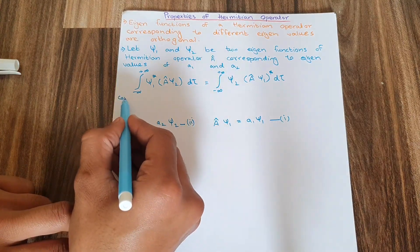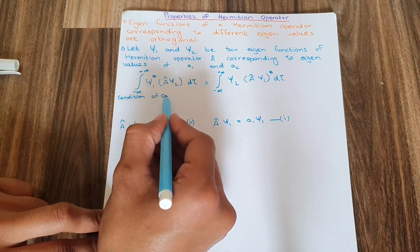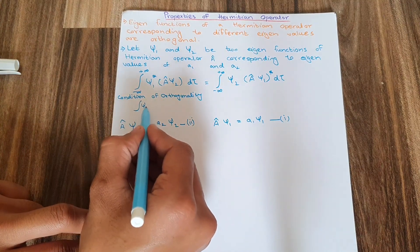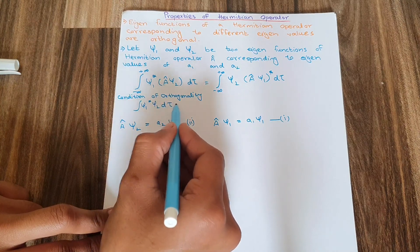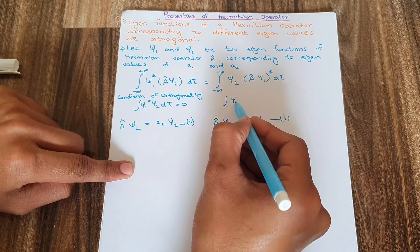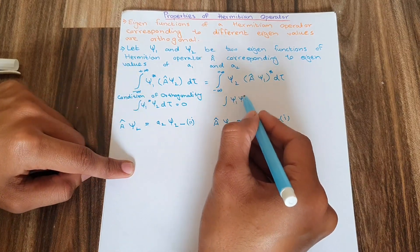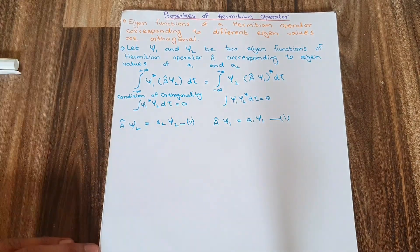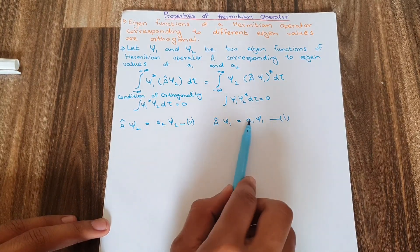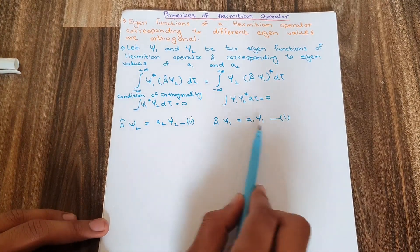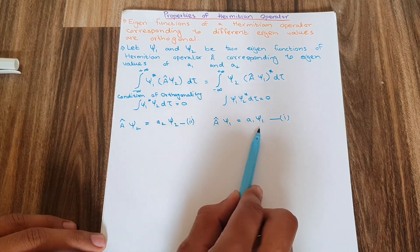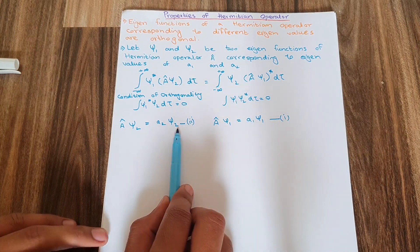The condition of orthogonality says that the integral of ψ₁* ψ₂ dτ should be equal to zero, and similarly the integral of ψ₂* ψ₁ dτ should also equal zero. What we need to prove is that if a₁ and a₂ are different, then ψ₁ and ψ₂ are orthogonal to each other.